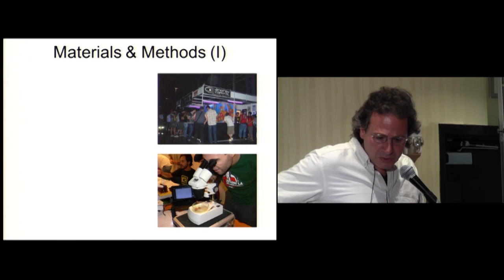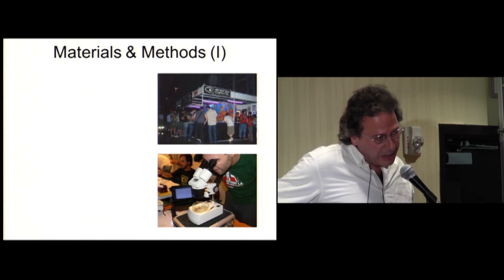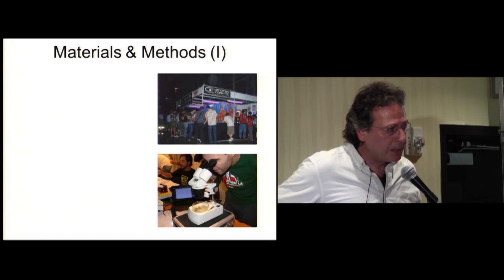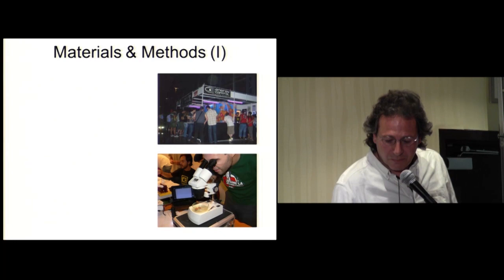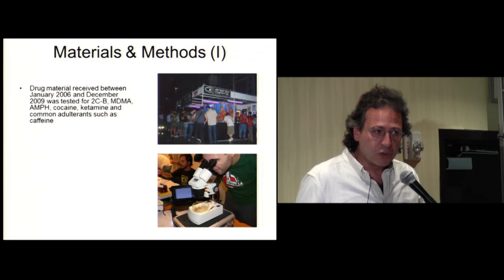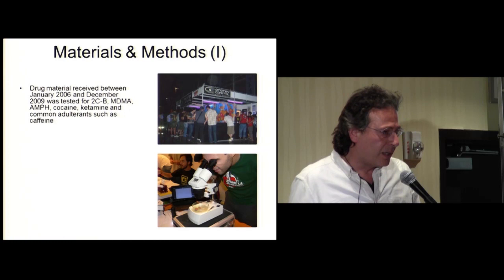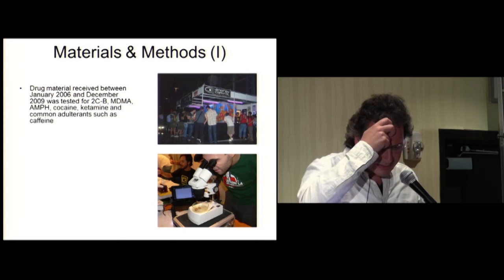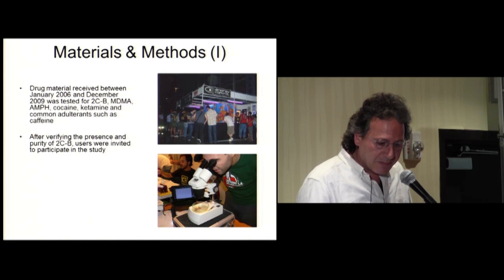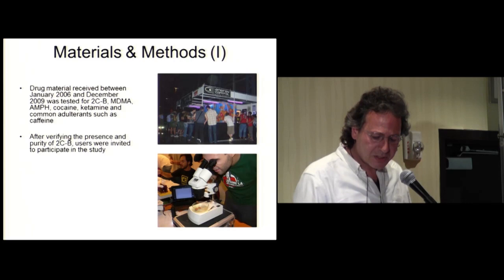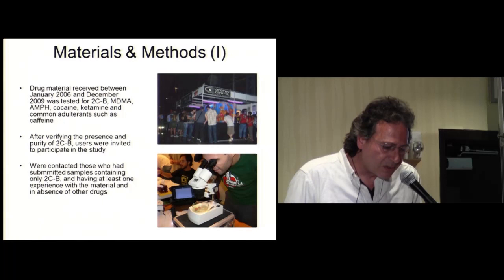First of all, I was involved in a non-profit organization named Energy Control where users can send samples and we analyze them. We also used to stay in parties and raves where we can analyze the drug. When we did this study, first was to analyze the drug material that users used to send us in order to be sure that what they are responding is to the effects of 2CB. Drug material received between January 2006 and December 2009 was tested for 2CB, MDMA, amphetamine, cocaine, ketamine, and common adulterants such as caffeine. After verifying the presence and purity of 2CB, users were invited to participate in the study.